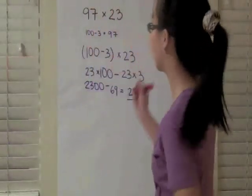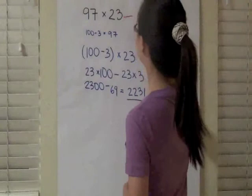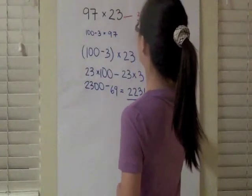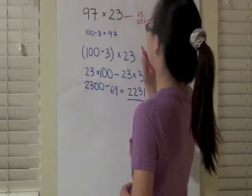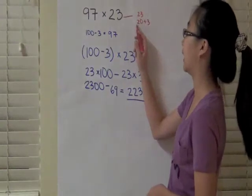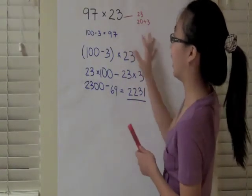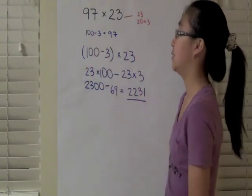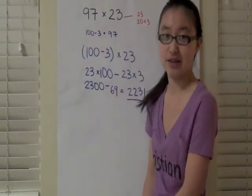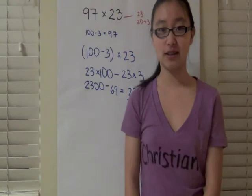It would also have been easier if you could write 23 as 20 plus 3, for example, because then you only have to multiply by 20 and then 3. But that's still not as easy as writing 97 as 100 minus 3. So that's all for this video.